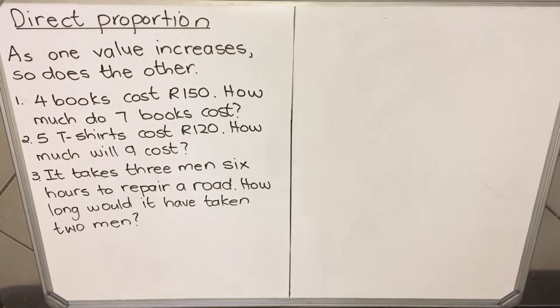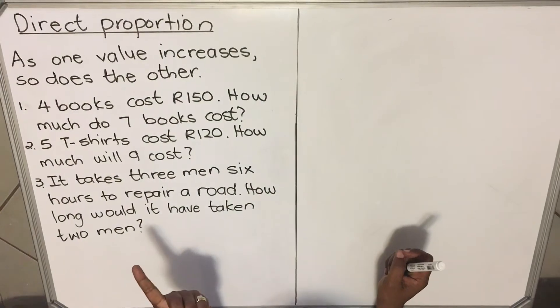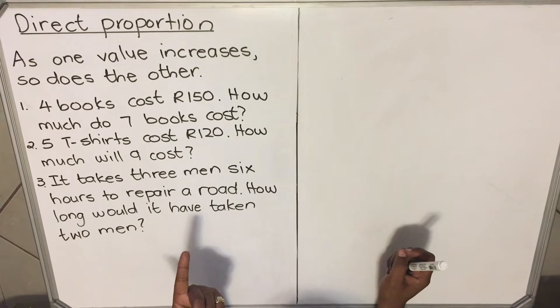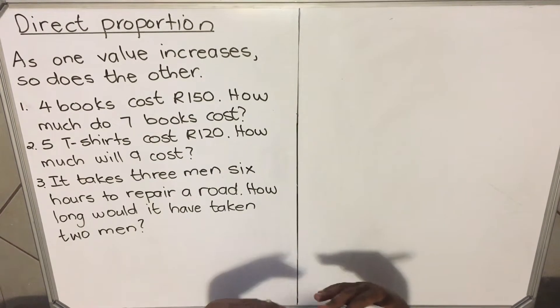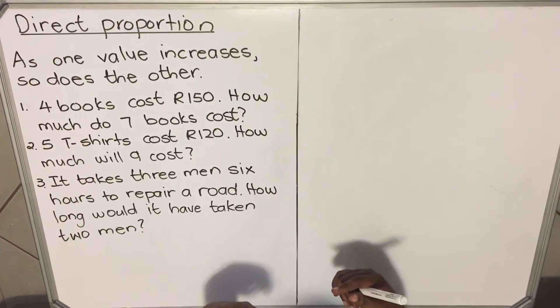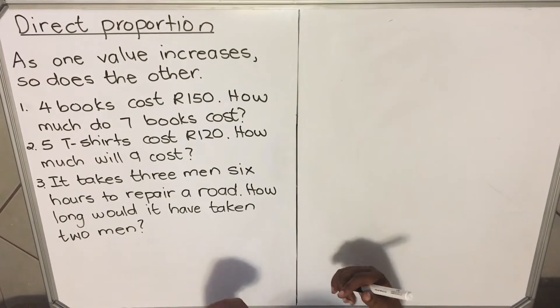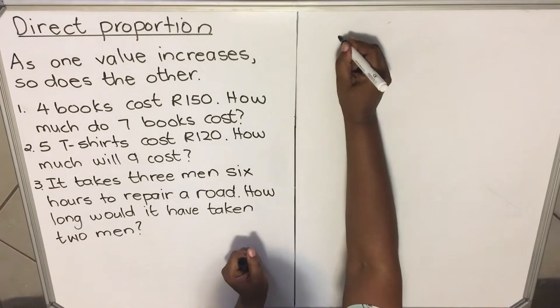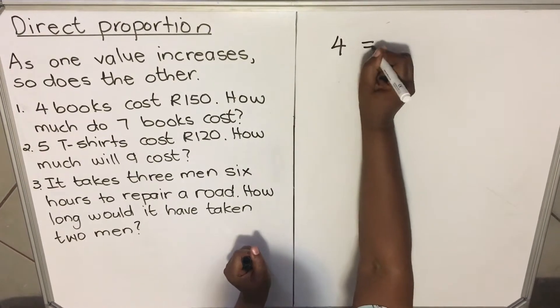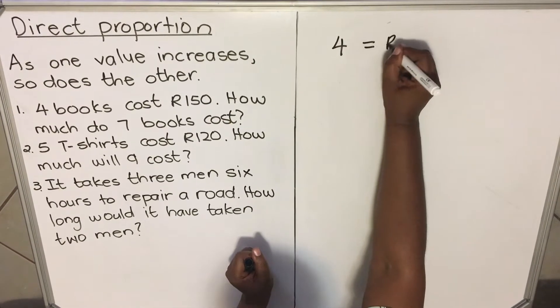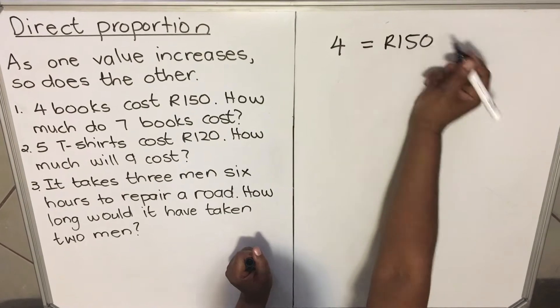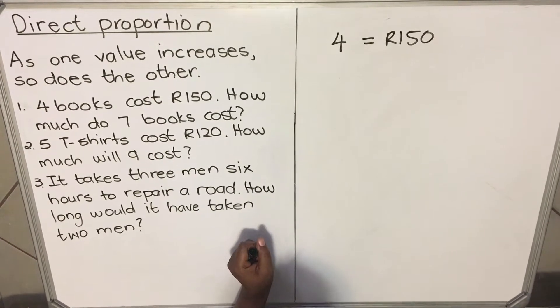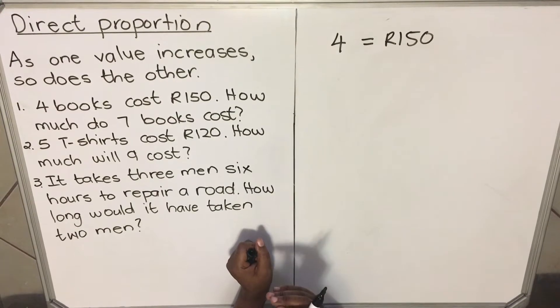Let's look at the first example. In number one, they say four books cost R150. How much do seven books cost? There are different methods of doing this question, but I particularly like one. If you say four books cost R150, find out how much would one book cost. Then you can calculate any number of books.